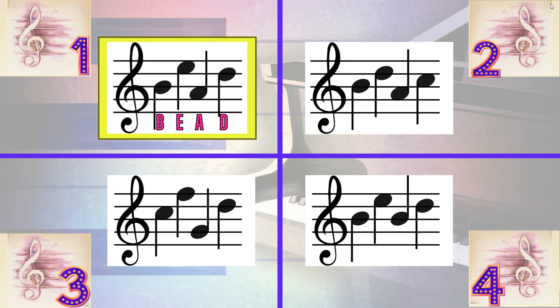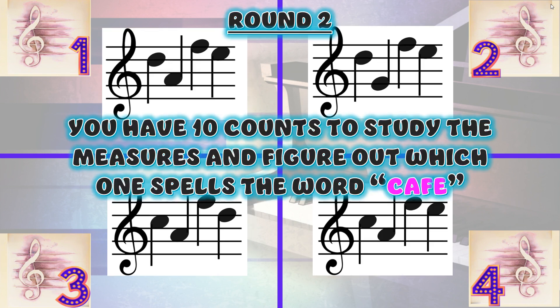If you got it correct, give yourself a mini round of applause, then come back to the center of the room for the next round. Round two. You have 10 counts to study the measures and figure out which one spells the word 'cafe.'